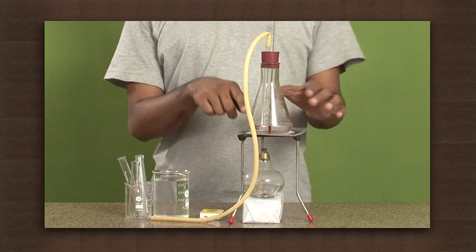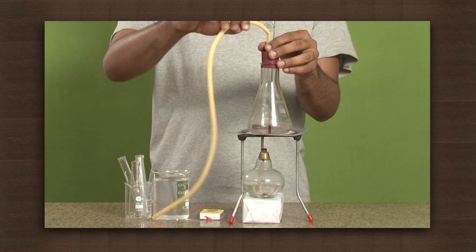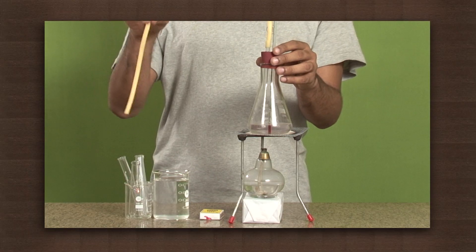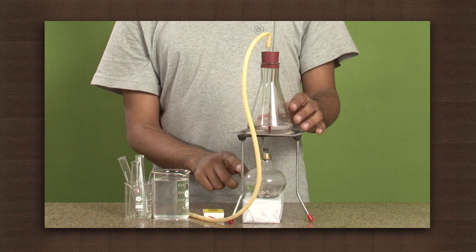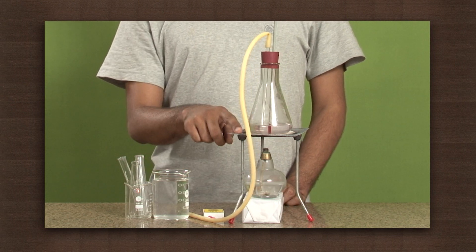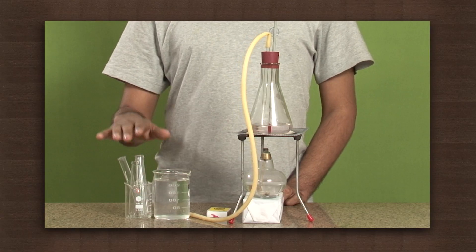Let us see an experiment to understand this process. We need a flask containing a mixture of ethyl alcohol and water. The flask is fitted with a gas delivery tube and a thermometer. We also have a spirit lamp, tripod stand, wire gauze, matchbox, beaker filled with cold water and test tubes.